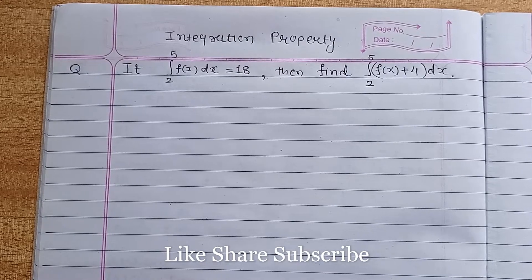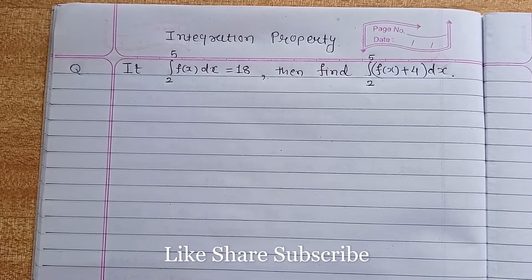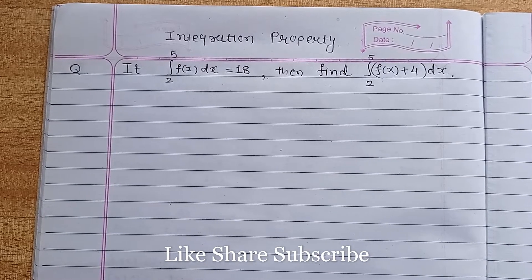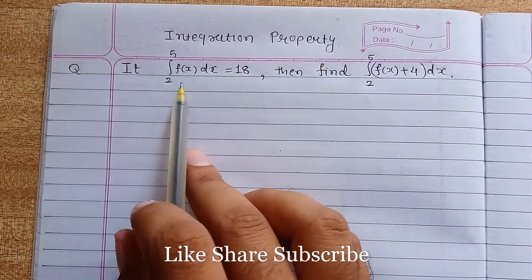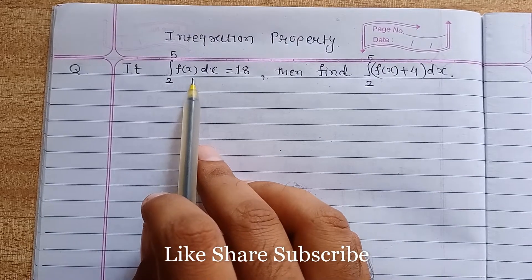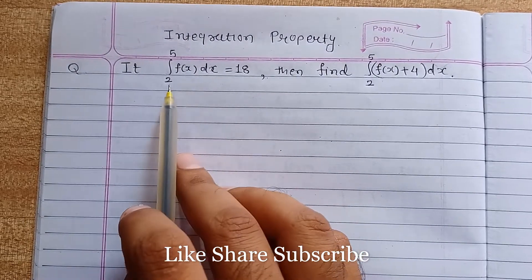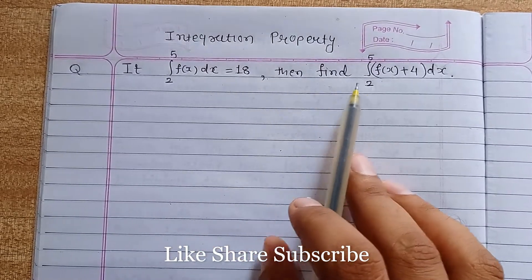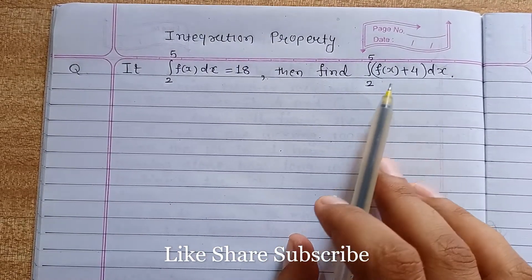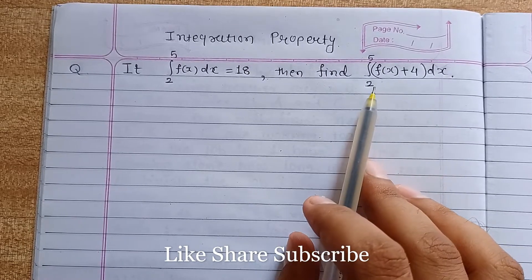Whenever you are ready, you can continue with the video and verify your answers. So the problem statement says if the integration of f(x)dx with limits from 2 to 5 equals 18, then find the integration of (f(x) + 4)dx with limits 2 to 5.